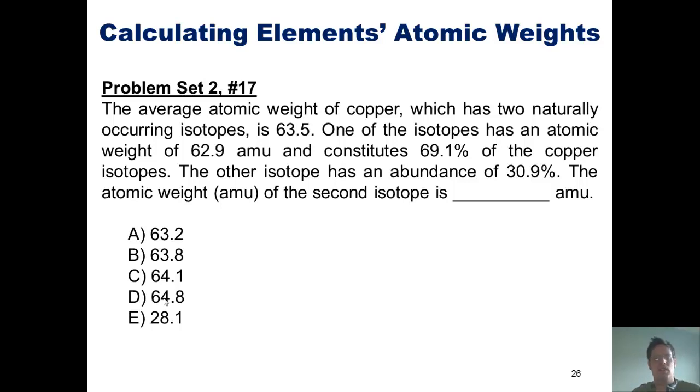One of these isotopes has an atomic weight of 62.9 and constitutes 69.1% of the copper isotopes. The other isotope has an abundance of 30.9%. The atomic weight of the second isotope is blank amu.